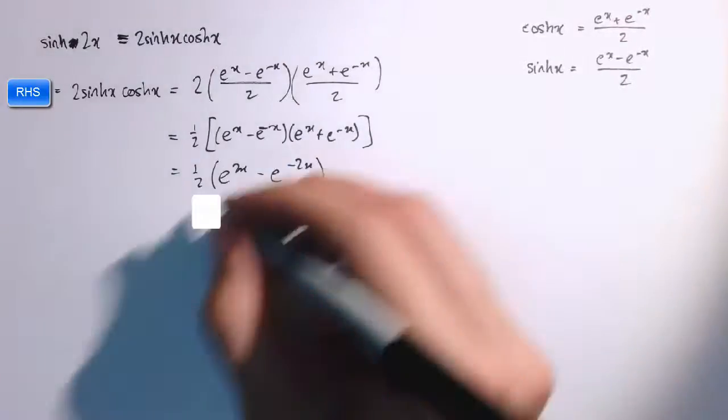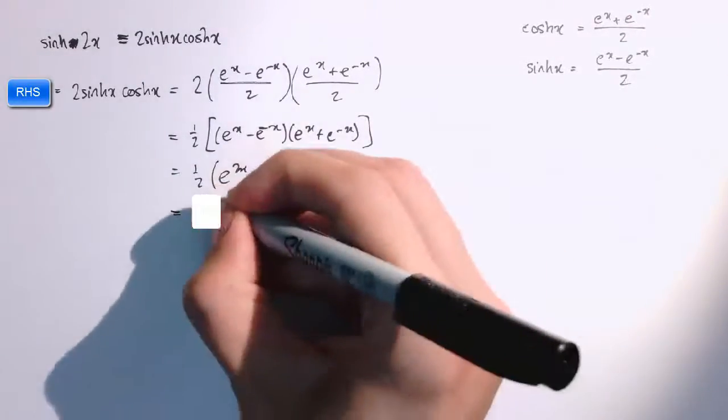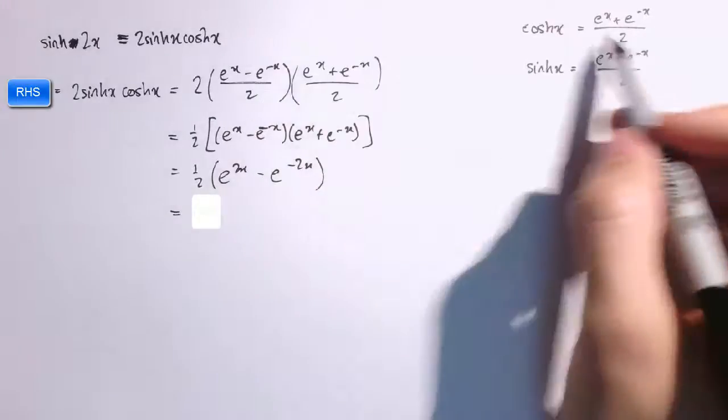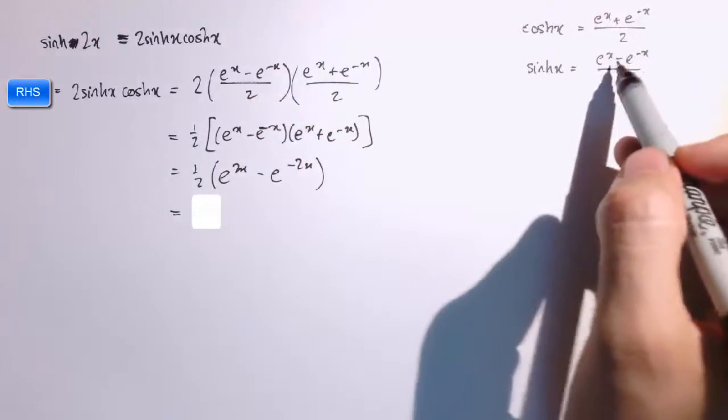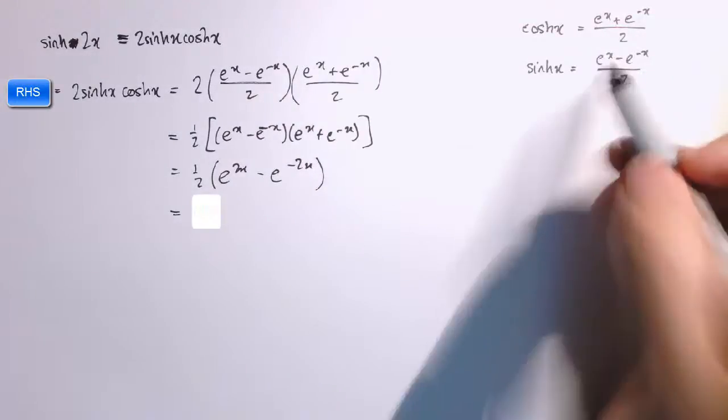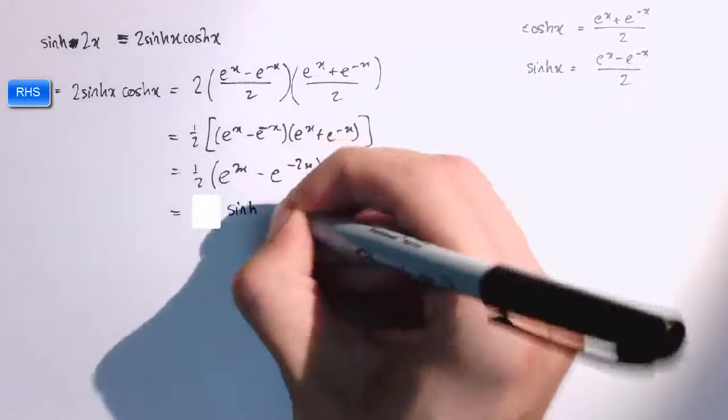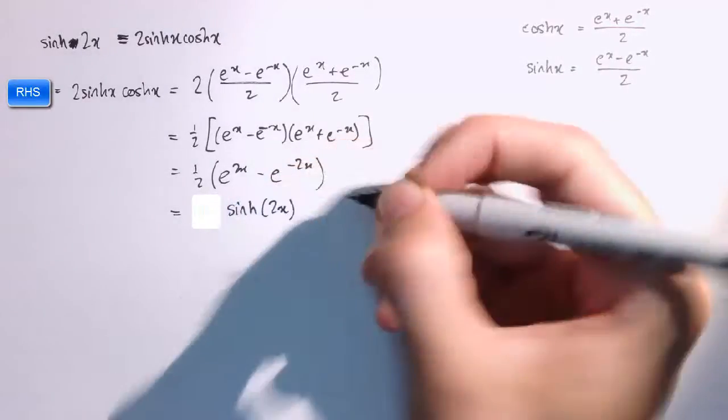So, I've got a half e to the 2x minus e to the minus 2x. So, that's exactly sinh x here, but with 2x in place of x, so that's sinh 2x, which is the left-hand side.